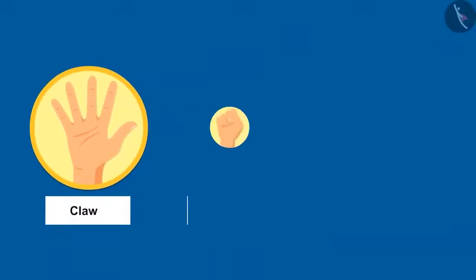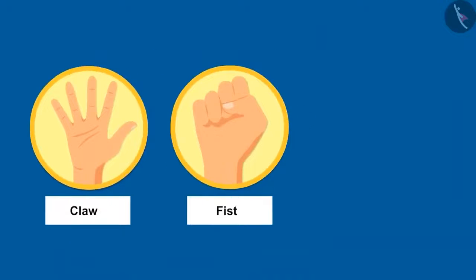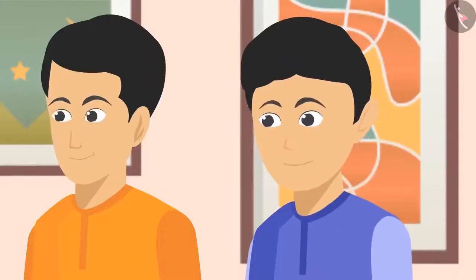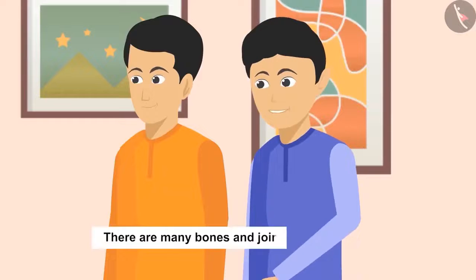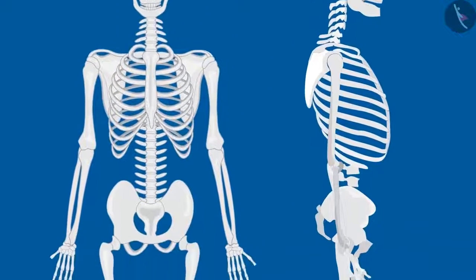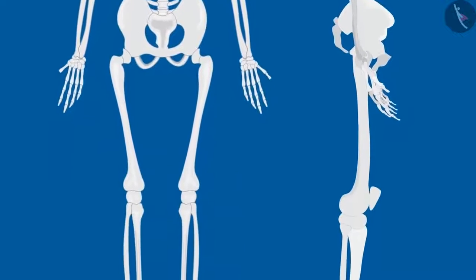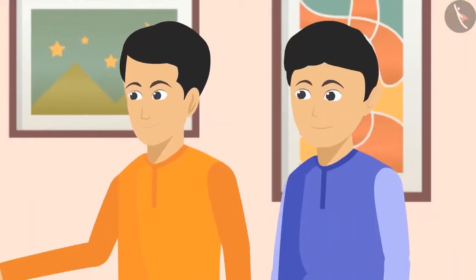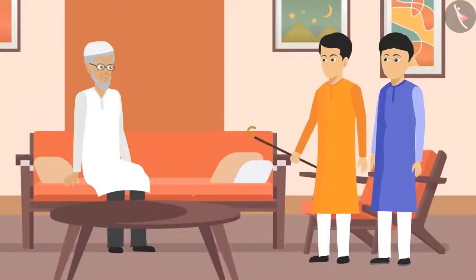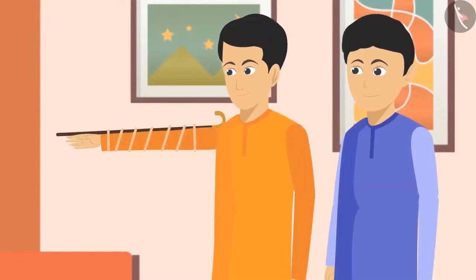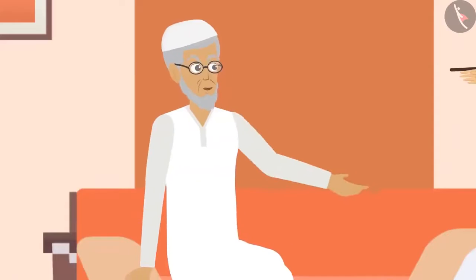The basic structure of our bodies is made up of bones, which are very hard, strong, and not flexible — that is why we cannot bend them. This was illustrated using a stick: if the stick is tied to the shoulder, the hand cannot be bent at all. This shows that movement is only possible at the joints, not along the bone itself.